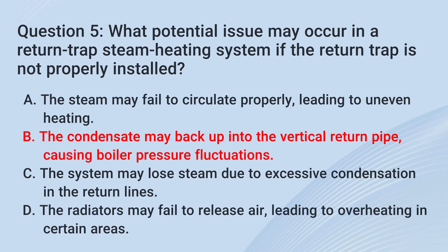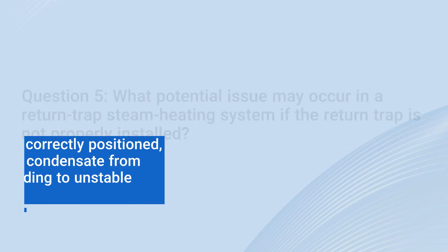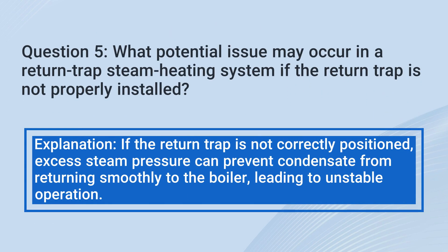The correct answer is B. The condensate may back up into the vertical return pipe, causing boiler pressure fluctuations. If the return trap is not correctly positioned, excess steam pressure can prevent condensate from returning smoothly to the boiler, leading to unstable operation.